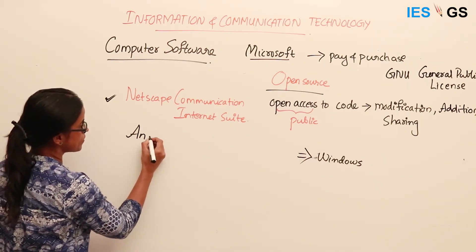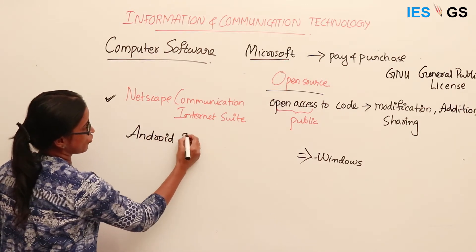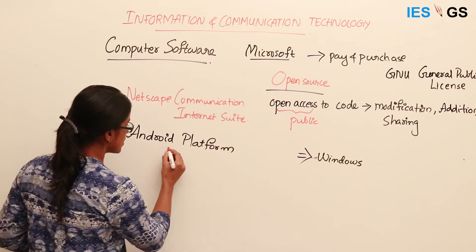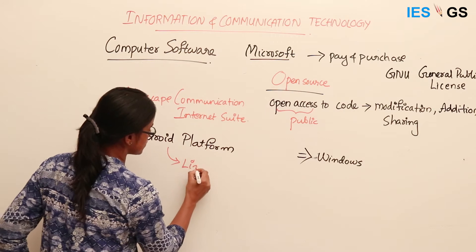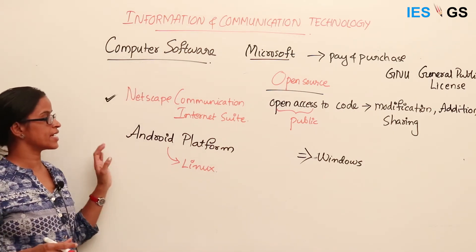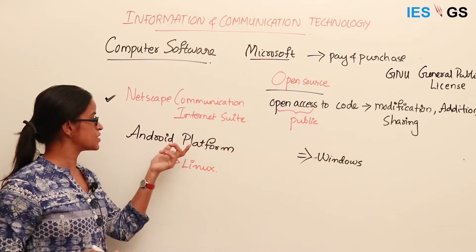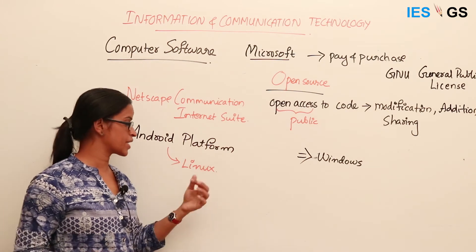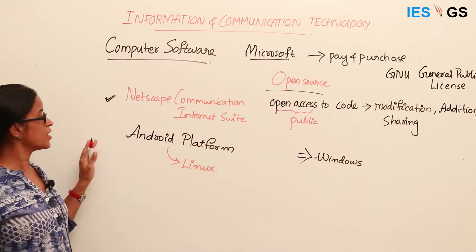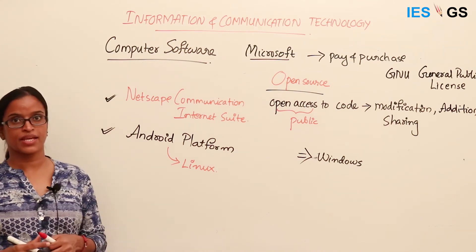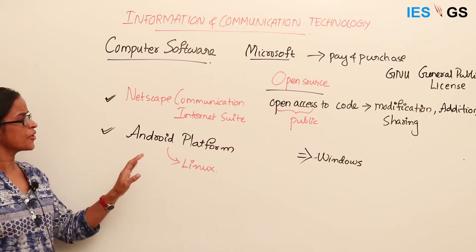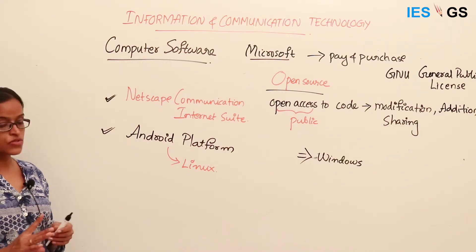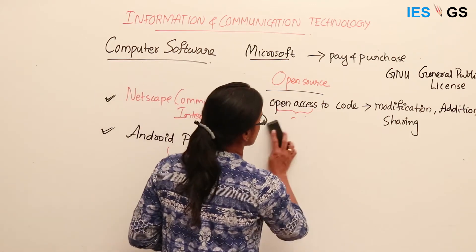Another most common example is the Android platform. The Android platform uses the Linux kernel, with certain software layers added to it. It is not a simple software — it is a platform with different elements like an operating system and application software inside. This is one of the most common open source platforms and forms the basis of the majority of software now in use.